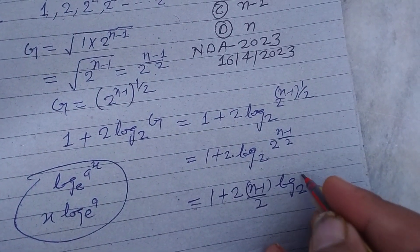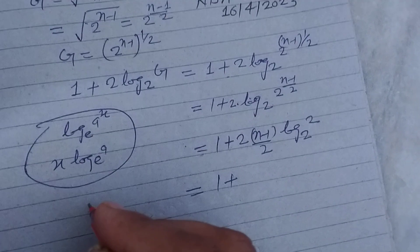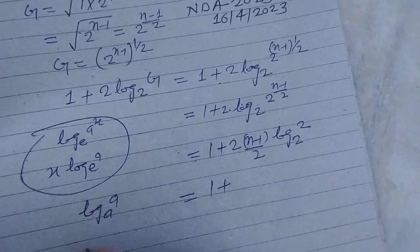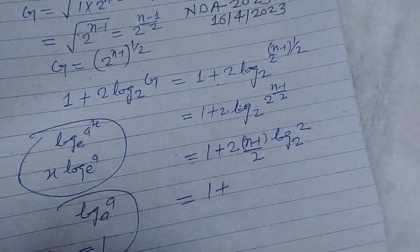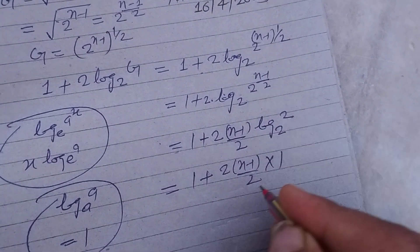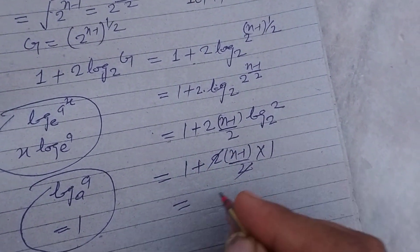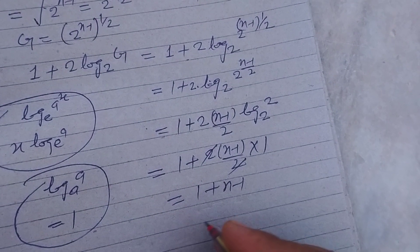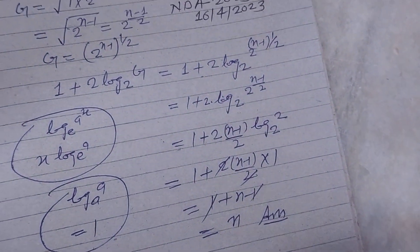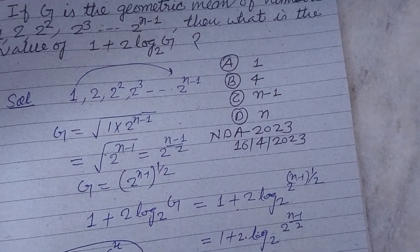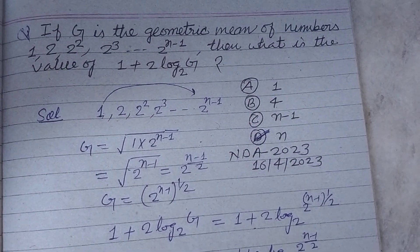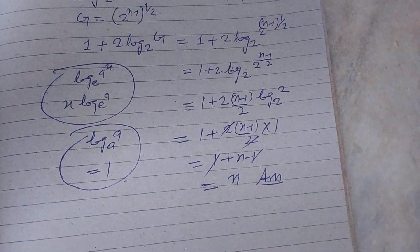And you know that log a base a is 1. Also learn this formula. So 2 into n minus 1 by 2, this 2 cancels, 1 plus n minus 1, these 1s cancel, this is n. So answer is n in this question which is found in option D of this question. I hope you got it, please like the video, subscribe the channel, thanks.